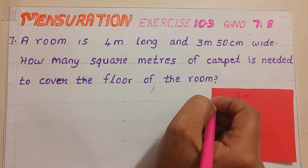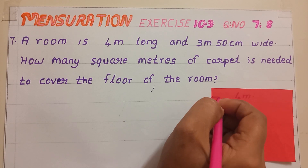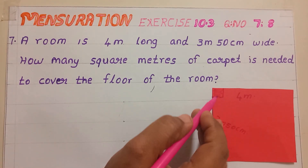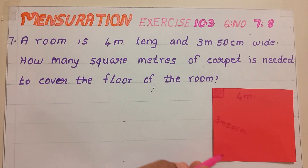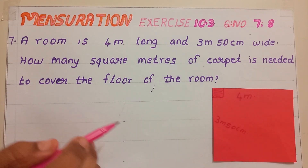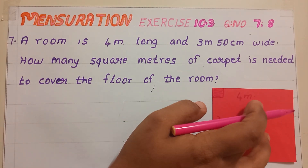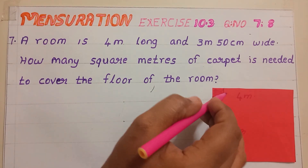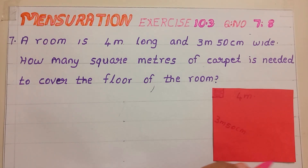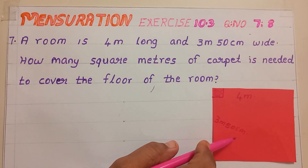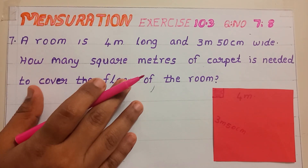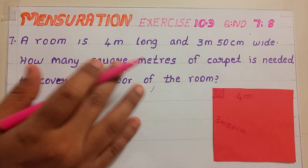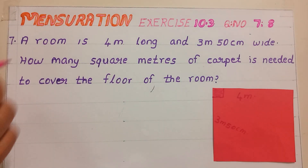Square meter — that means this is 1 square meter. We are required to find how many such square meters are in this floor. So, to find that, we should find the area of this floor. From the concept of area, we realized that in this problem we are required to find the area of this floor.